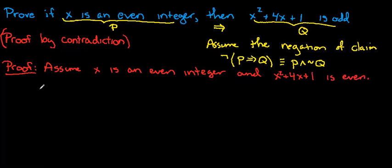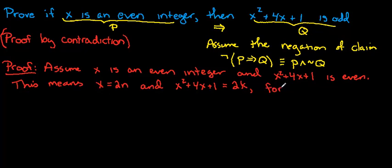This means that x equals 2n, and x squared plus 4x plus 1 equals 2 times some integer, let's call it k, and let's specify that n and k are integers.